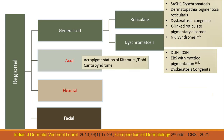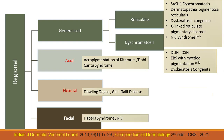In the acral variant, very commonly seen, is acral pigmentation of Kitamura. Dohi is actually another name for dyschromatosis symmetrica heredaria, and the Cantu syndrome. In the flexural, we have Dowling-Degos and its variant, the Galli-Galli disease, which is basically a acantholytic variant. And in the facial, we have Haber syndrome and the NFJ syndrome. I think this is the most useful way of looking at these disorders, and one tends to diagnose them very easily with this particular classification.